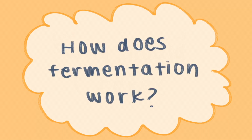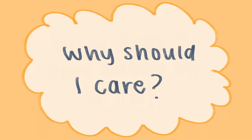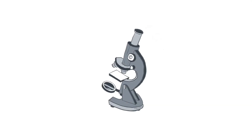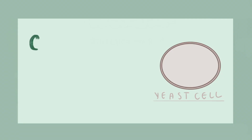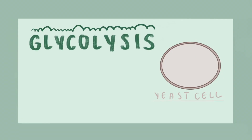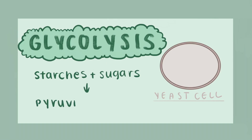So how does fermentation work? And why should we care about it anyway? To understand fermentation, let's look at what a yeast cell looks like under a microscope. The first step to fermentation is a process called glycolysis. In glycolysis, the yeast cell converts starches and sugars to pyruvic acid.